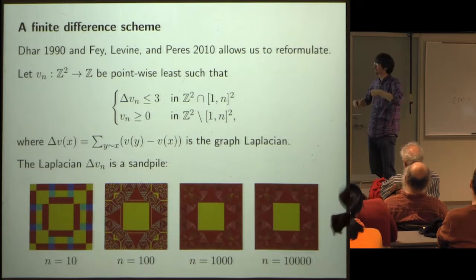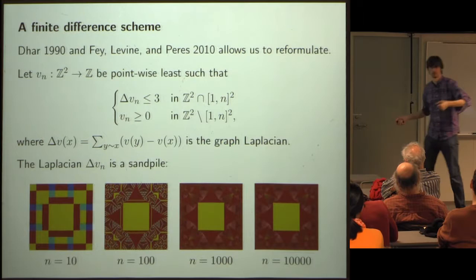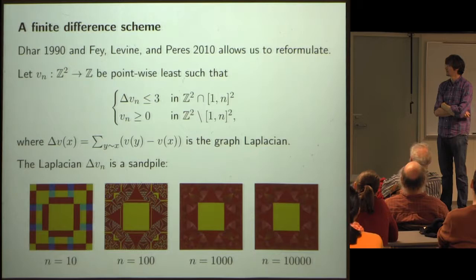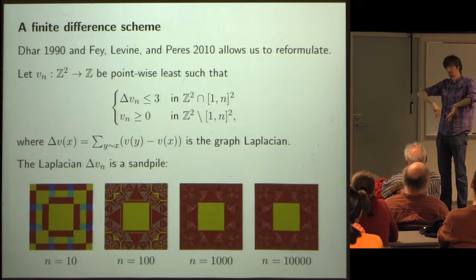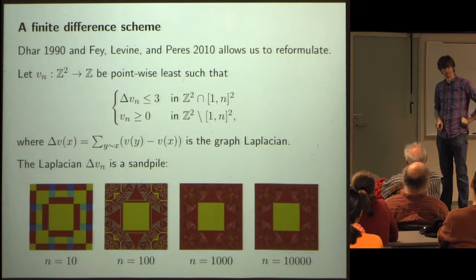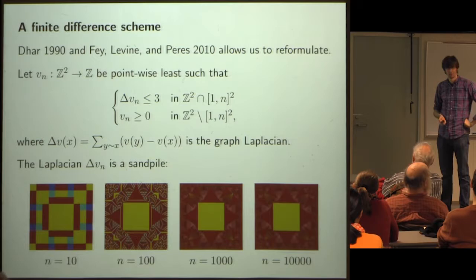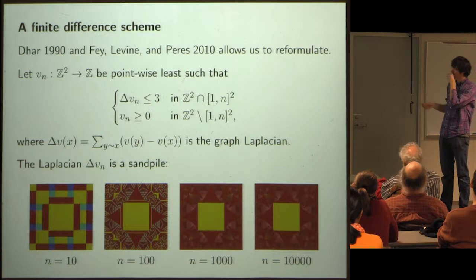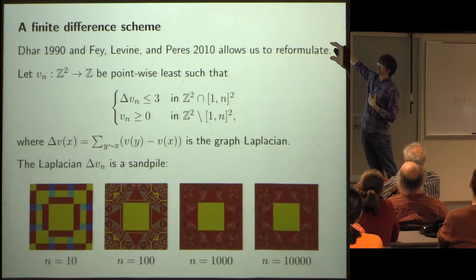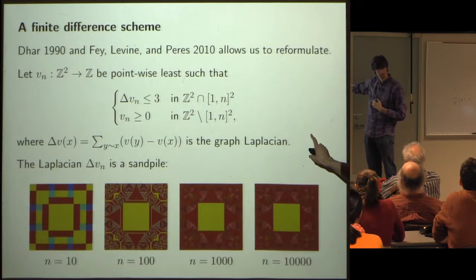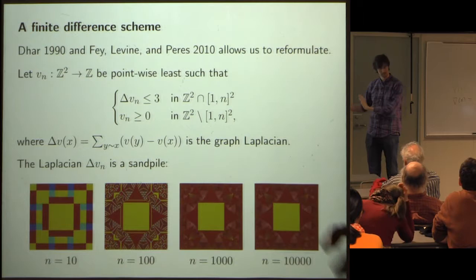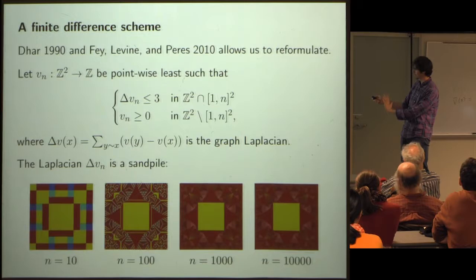An audience member asks: how can a number of topples be negative? The answer involves untoppling — you start with no chips and pull chips in from the boundary by untoppling. For the purposes of this talk, I'll just assert that the sandpile is equivalent to this formulation, for reasons I won't fully explain.